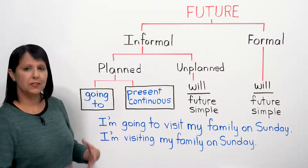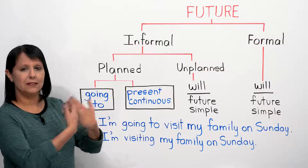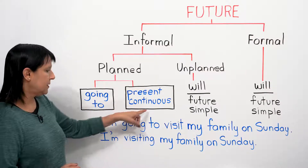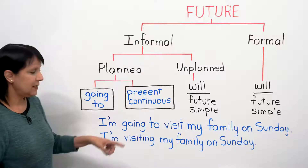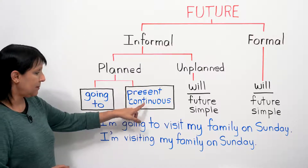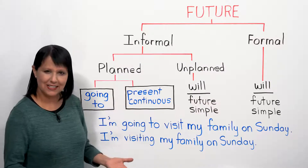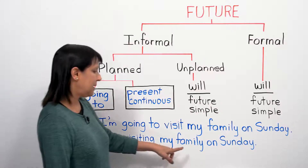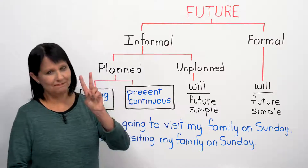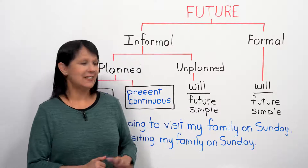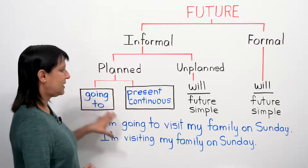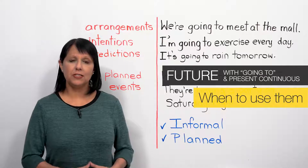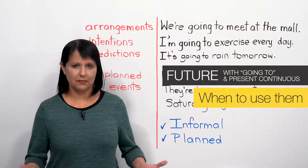'Going to' tells us that it's a plan and that it's going to happen in the future. Or you could say the same thing another way by using the present continuous tense: 'I'm visiting my family on Sunday.' So these are the two ways we will focus on in this class - let's look at when to use them.